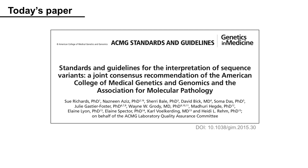Today's paper is 'Standards and Guidelines for the Interpretation of Sequence Variants,' a joint consensus recommendation of the American College of Medical Genetics and Genomics and the Association for Molecular Pathology, published in 2015. This paper provides a variety of information needed to interpret the pathogenicity of genetic variation and classify the variants into five categories: pathogenic, likely pathogenic, uncertain significance, likely benign, and benign. Although this paper is full of content and complex, it is important as it is always mentioned in clinical genetics.